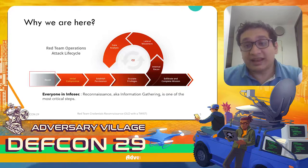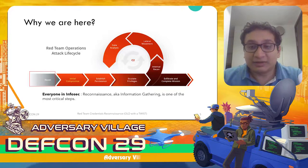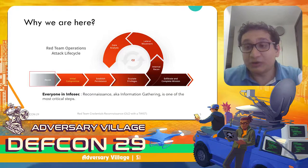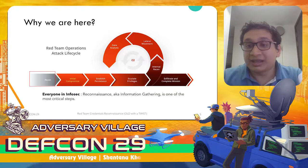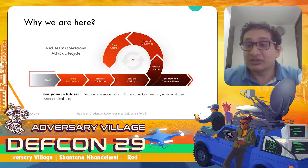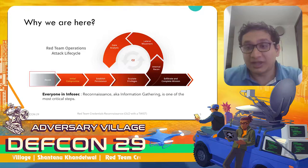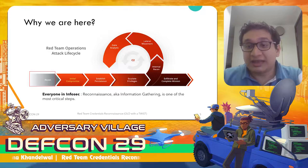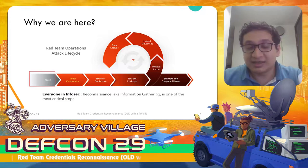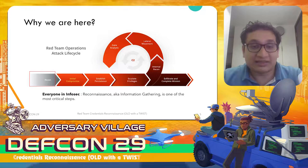Before we start, I want to go over reconnaissance quickly and how it fits inside an adversary simulation or emulation methodology. Reconnaissance is the first step in the kill chain. As red teamers, we often do it before the initial compromise phase, and everyone in infosec keeps saying that information gathering or reconnaissance is one of the most critical steps.